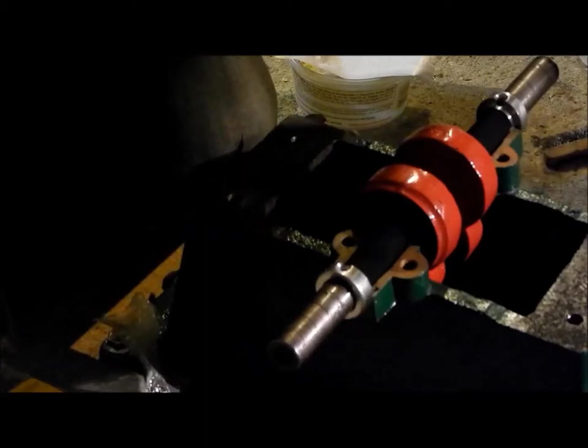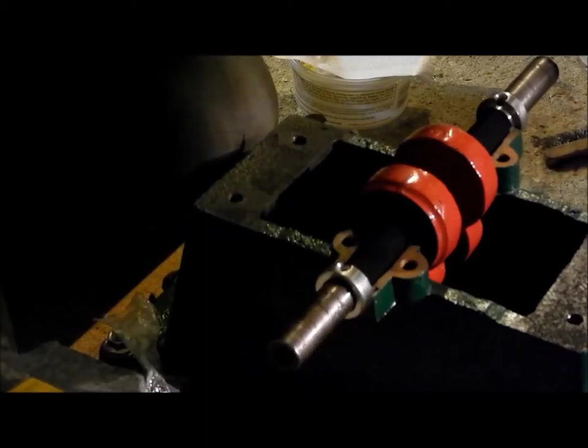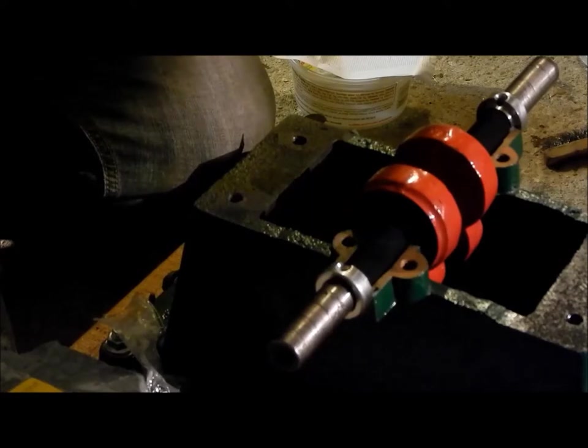Now, why can't you do the top and bottom in one pour? Because it's a split bearing. It's easier to pour it twice than it is to try and slice it in half after the fact.